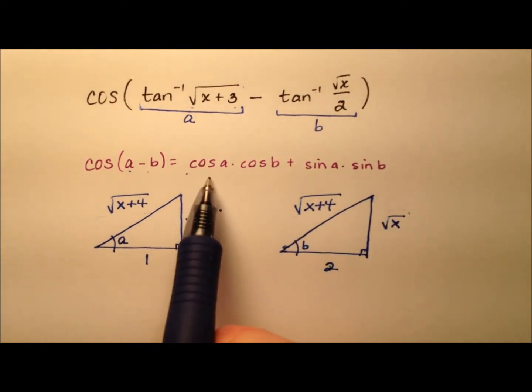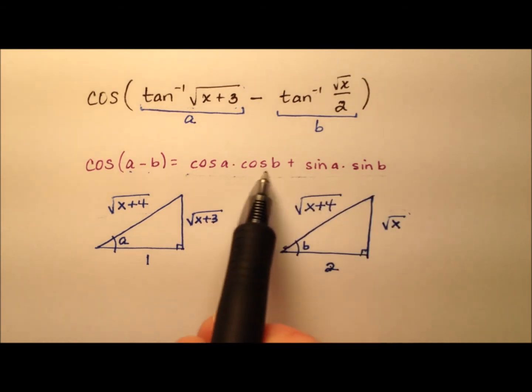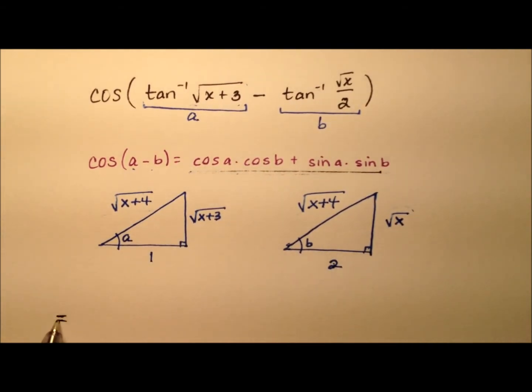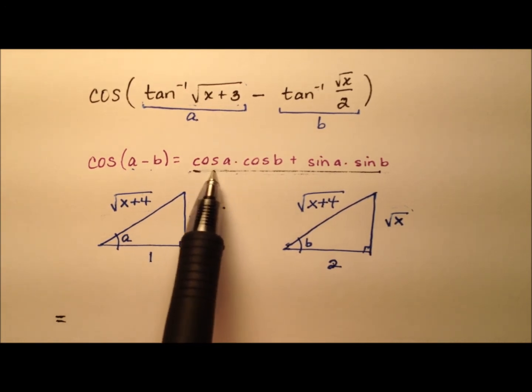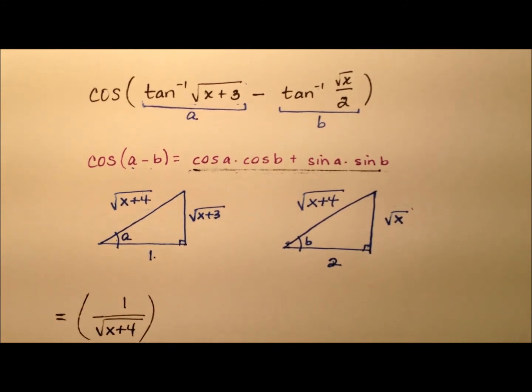So now that we have our reference triangles, we can go ahead and use this difference identity for cosine, this expansion to see what we have. So this is going to equal the cosine of A. Angle A is here, and cosine is adjacent over hypotenuse. So it'll be 1 over the square root of x plus 4, and that's in parentheses.